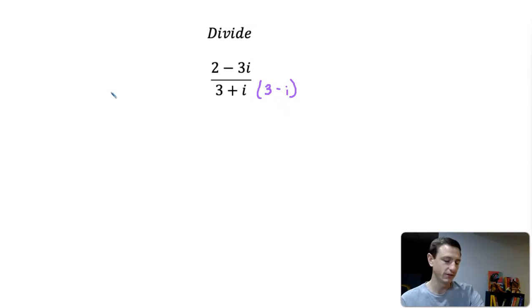It's the same concept as if you were to rationalize the denominator—like if you had 2 over 1 plus the square root of 2, you would multiply by 1 minus the square root of 2. You rationalize by multiplying by the opposite sign.